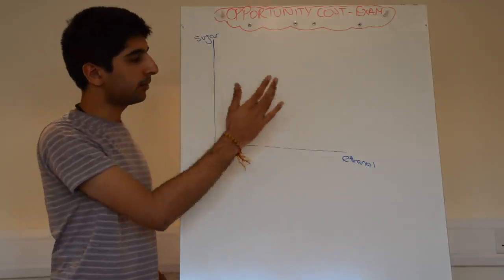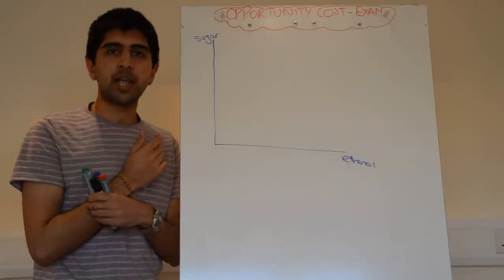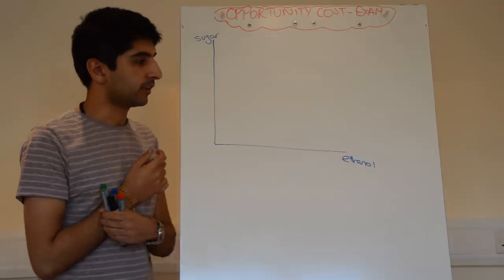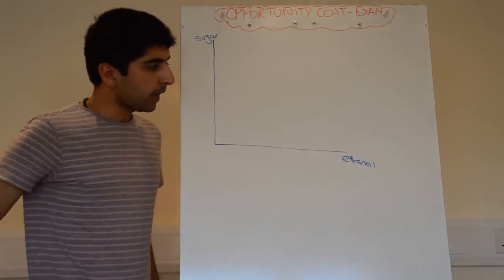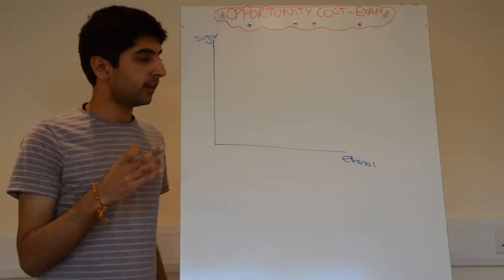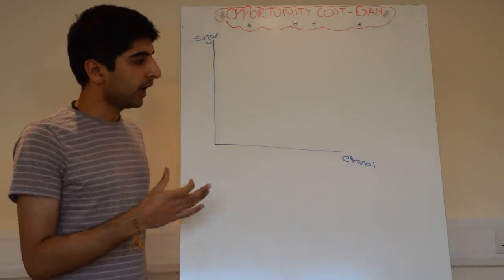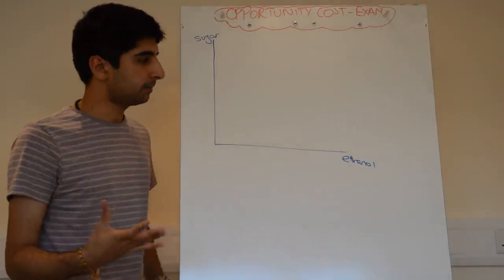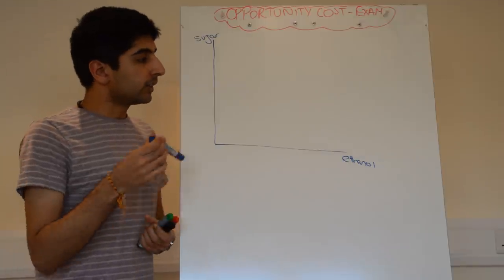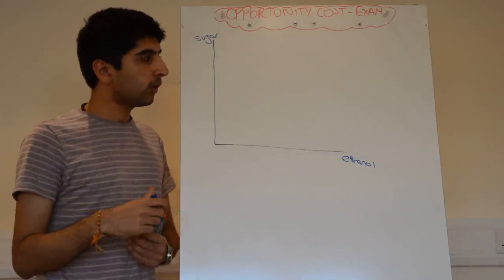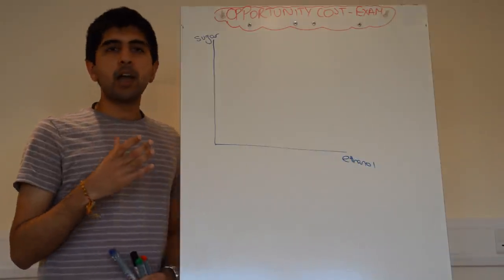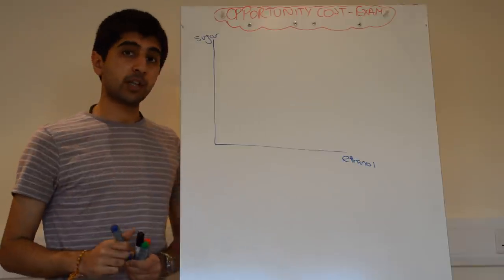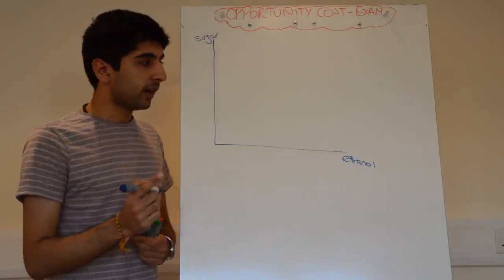To start with I'm going to use the example of Caribbean sugarcane processors. This was an actual OCR exam paper a few years ago. It talks about the choices being faced by Caribbean sugarcane processors — either to produce more ethanol or not basically. So this question was all about opportunity cost. The question was: using the PPC, how can you represent the concept of opportunity cost facing Caribbean sugarcane processors? This is how you would go about doing it.